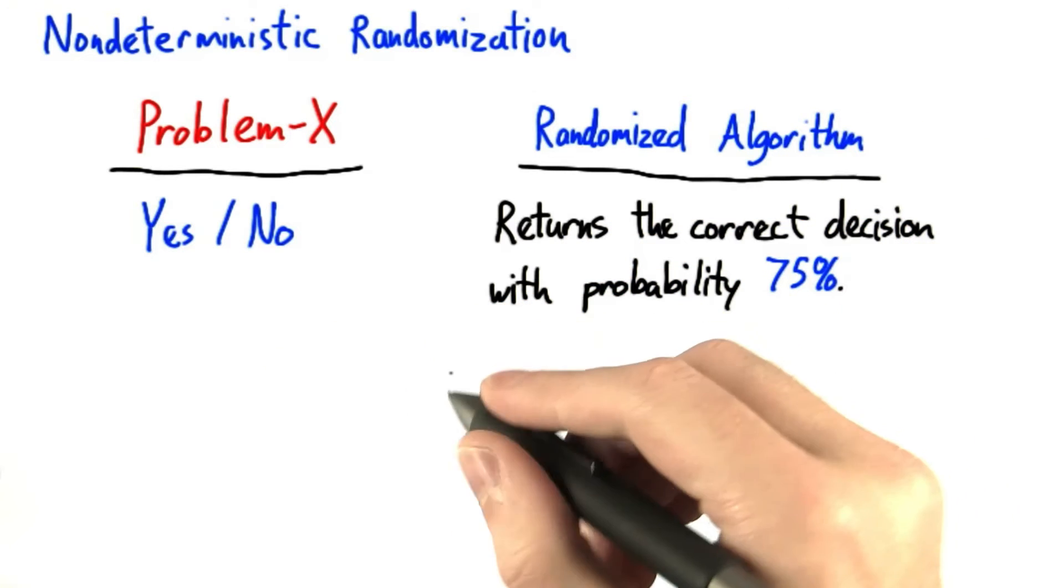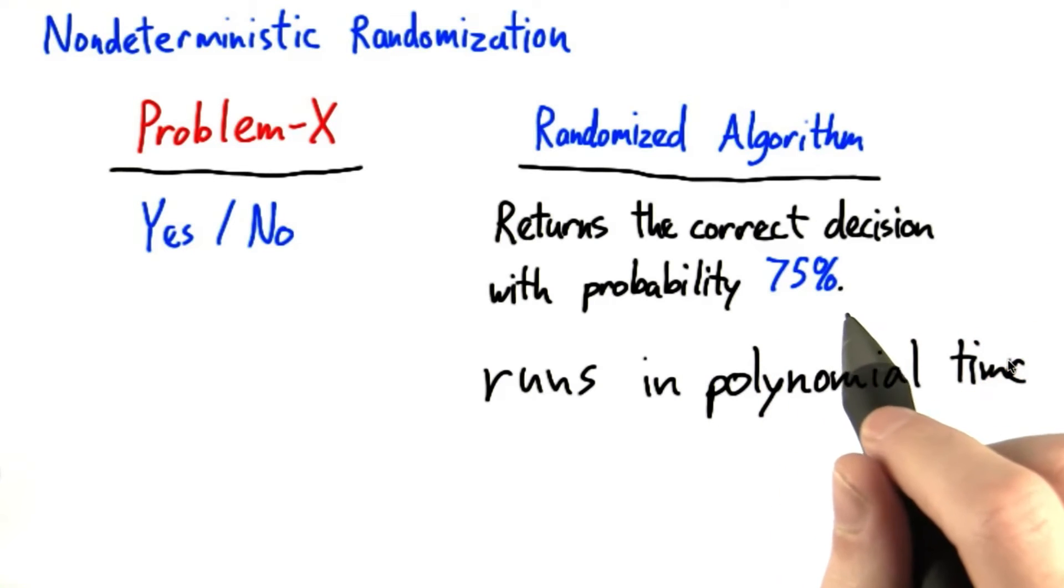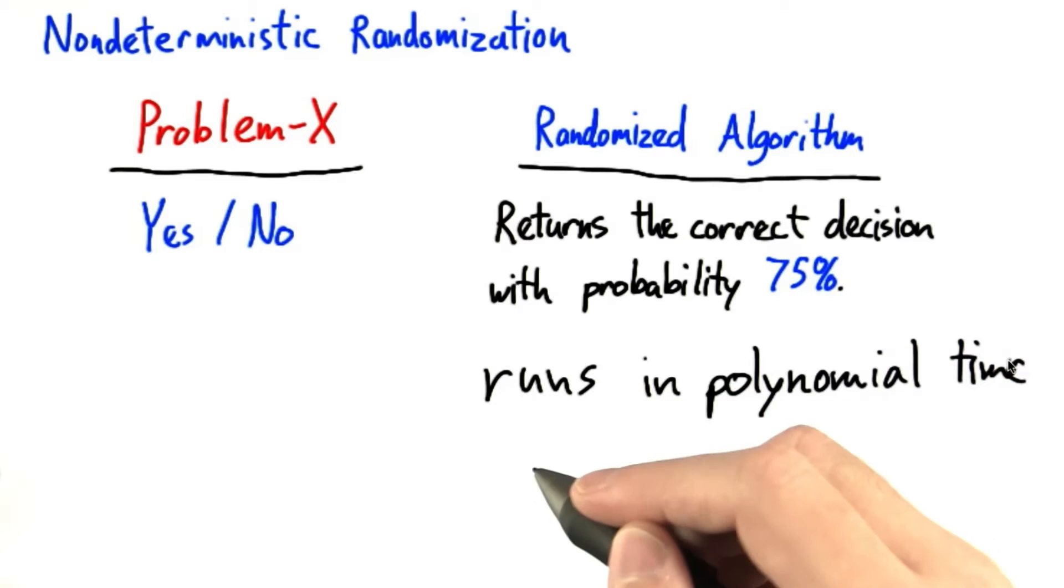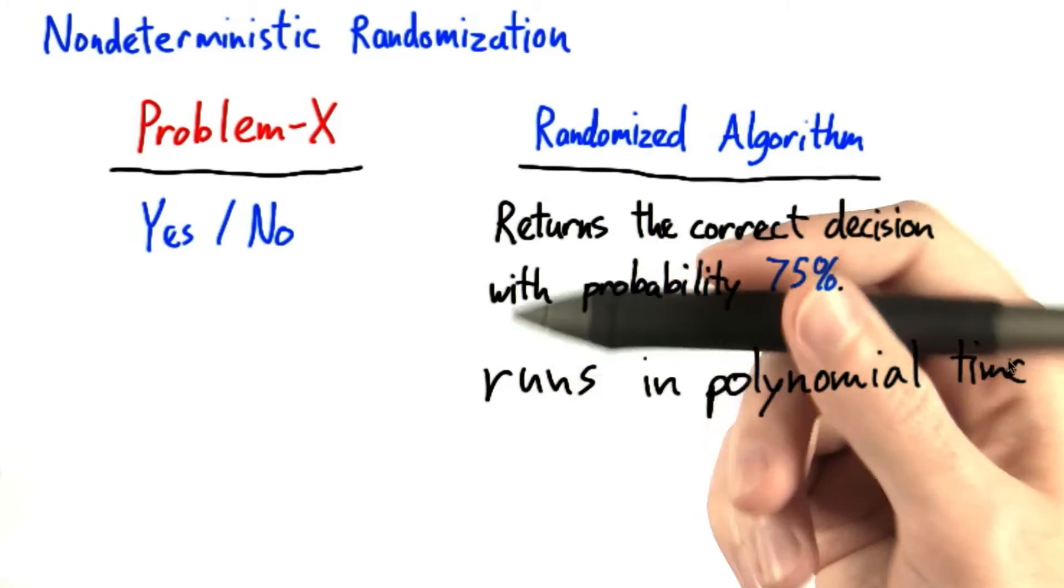Let's say that the randomized algorithm runs in polynomial time and that the type of randomization it uses is basically just a coin flip. So, at certain points of the code, it just flips a coin and decides to continue execution at one of two places at random.